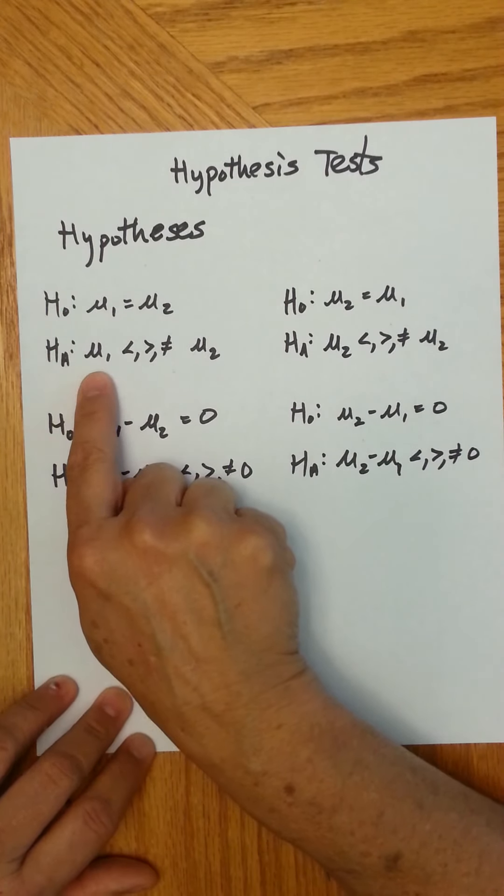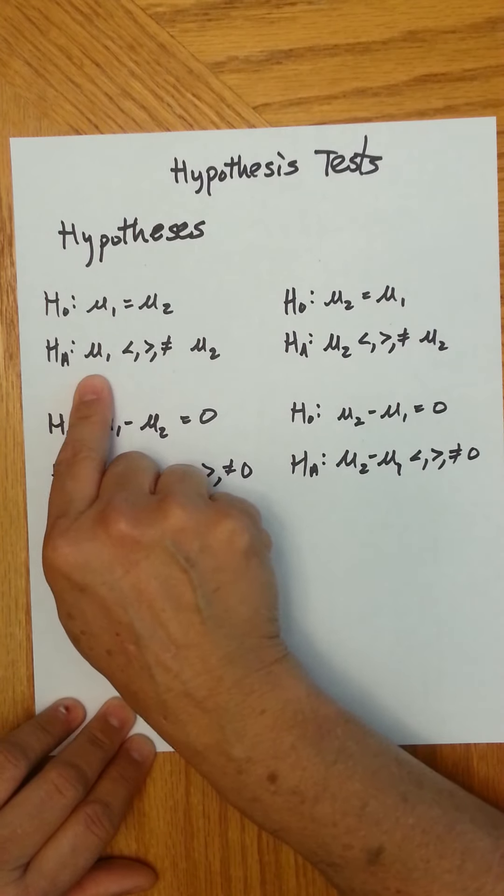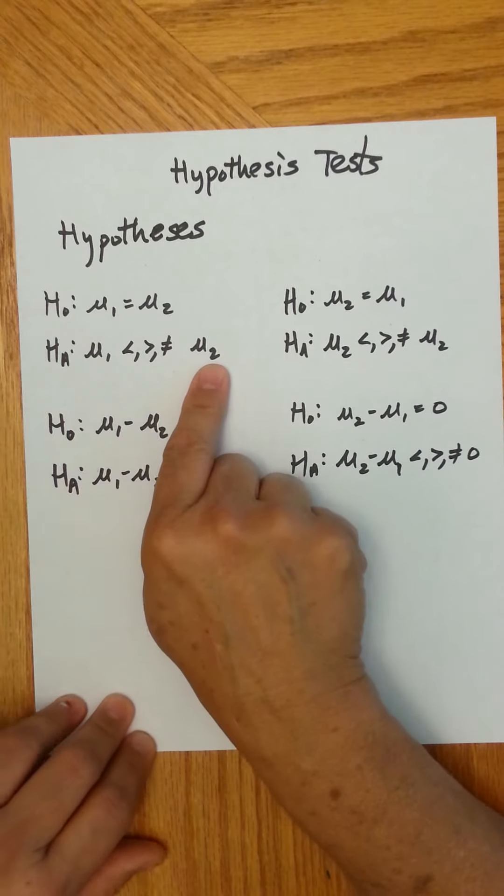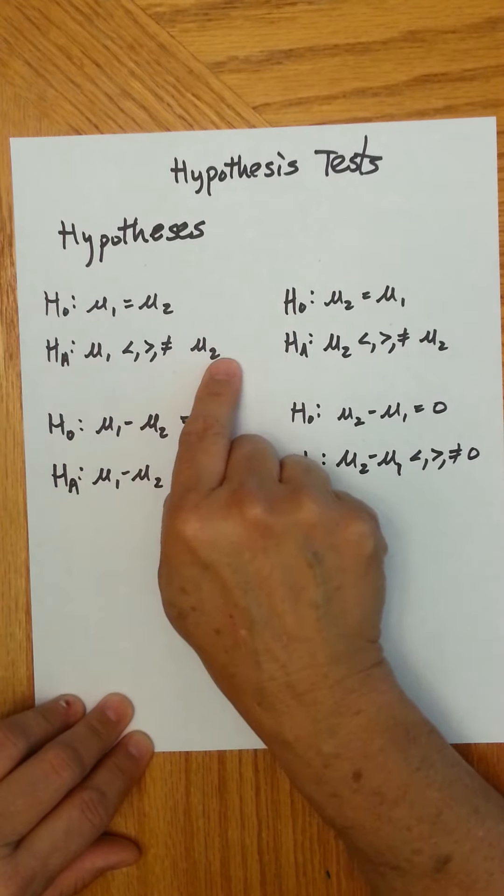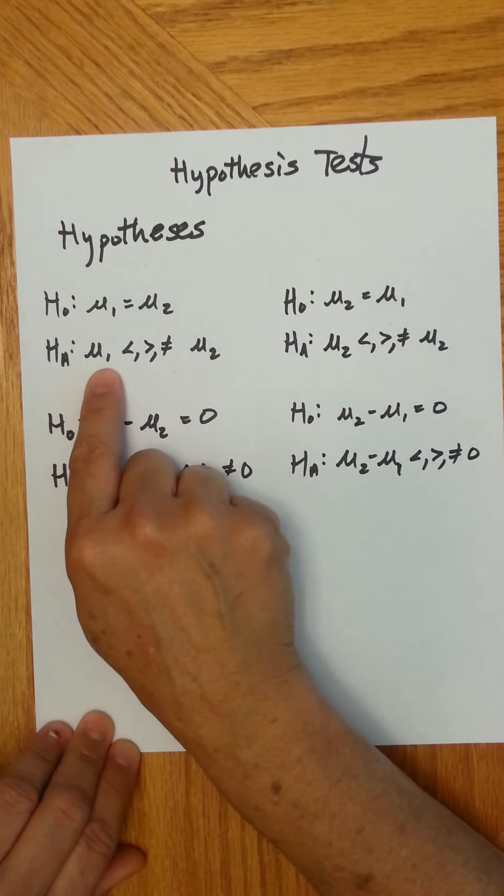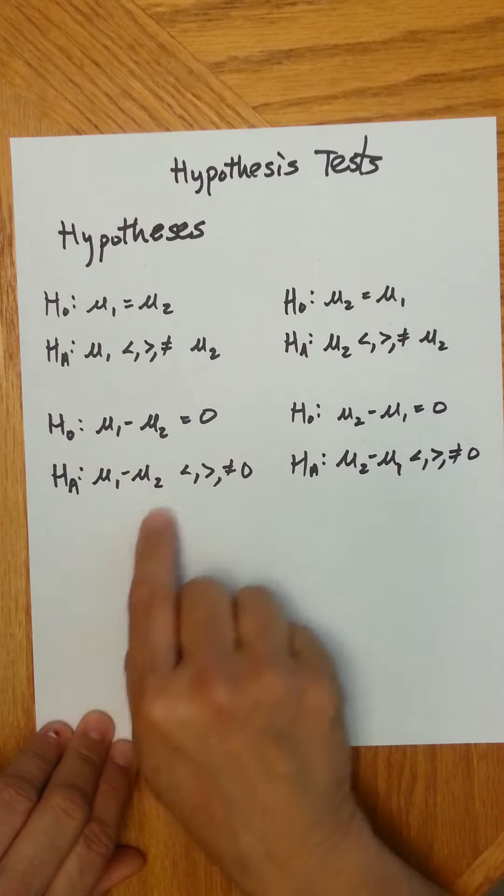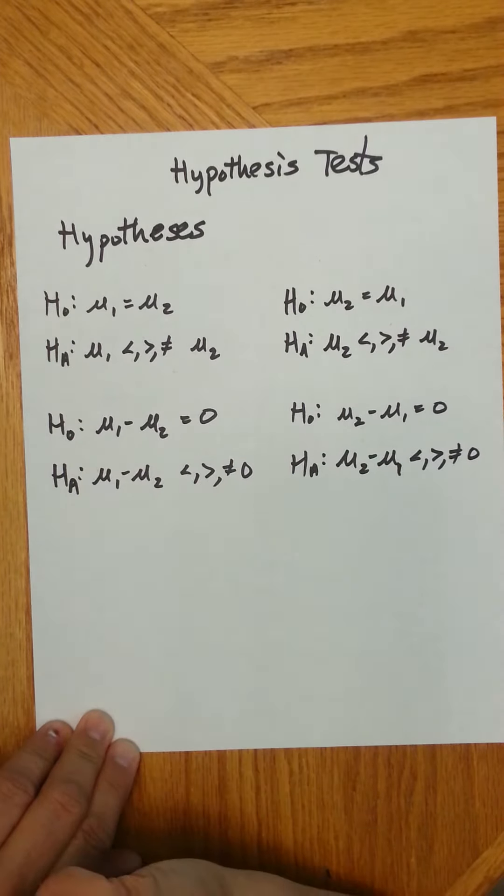The alternative: you're countering and saying there's some kind of difference. Maybe the trait occurs less in one population than another, more in one population than another, or it's just different. Using algebra, you can always subtract mu2 from both sides for this one, and you'd get the difference mu1 minus mu2 is zero versus whatever the counter claim is.